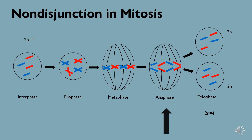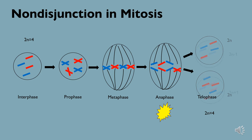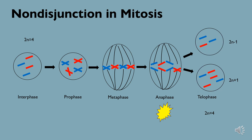Mitotic nondisjunction occurs when something goes wrong in this process and sister chromatids do not separate properly. As a result, we still get the creation of two new diploid daughter cells, but one has an extra chromosome, denoted by the 2n+1 notation, and the other cell is missing a chromosome, denoted by the 2n-1 notation.